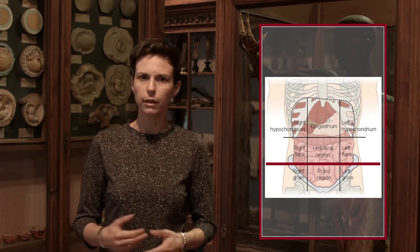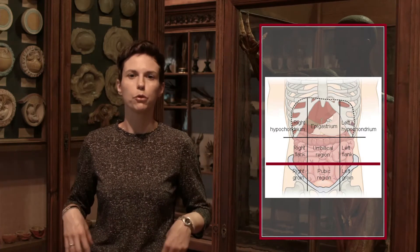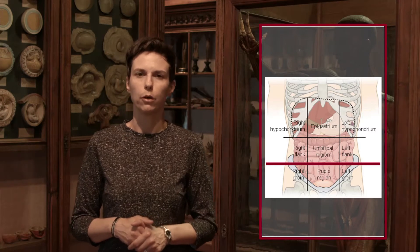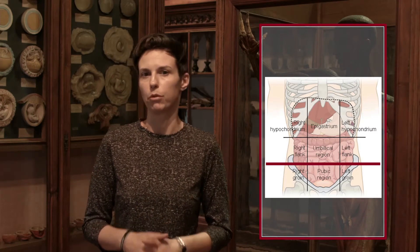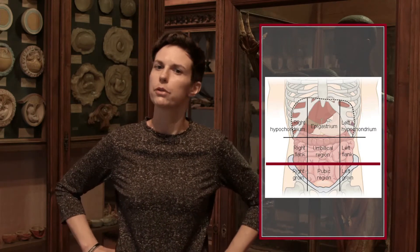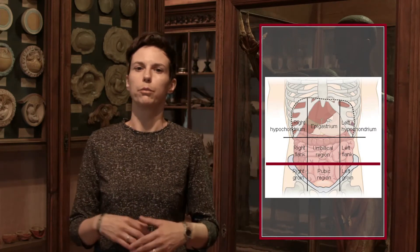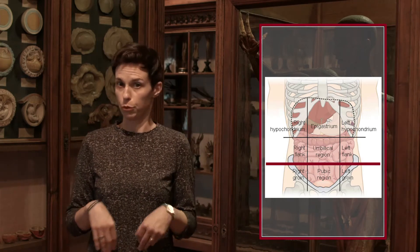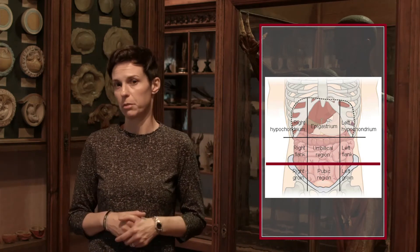The inter-tubercular line passes between the tubercles on the upper margin of the hip bone — these are the two bony points you touch when told to put your hands on your hips.